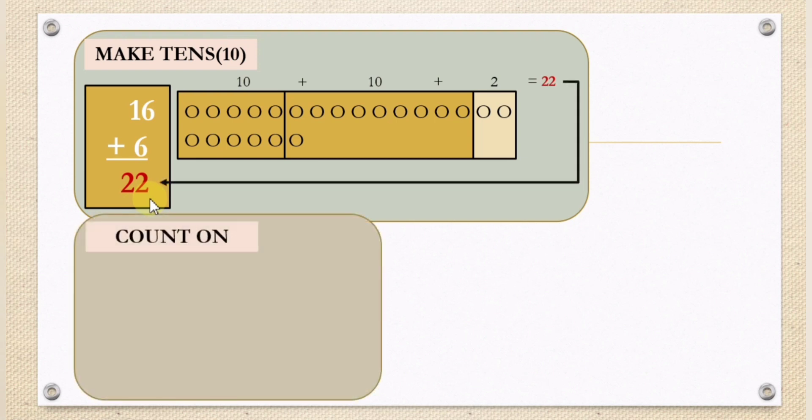Count on. 6 plus 16 equals 22. Count on method: we will count 6 counts after 16. We have 16, start 16, then 17 is 1, 18 is 2, 19 is 3, 20 is 4, 21 is 5, 22 is 6. 22 will be in the 6th count.